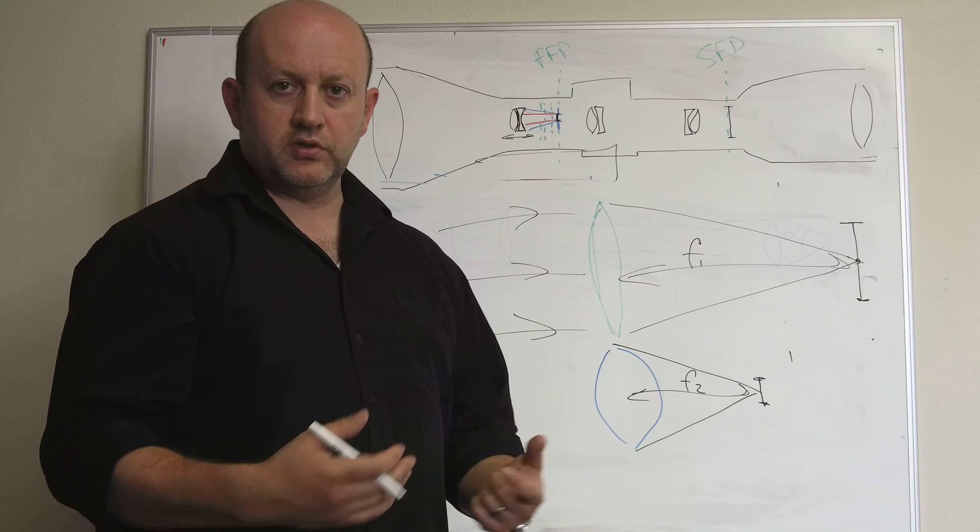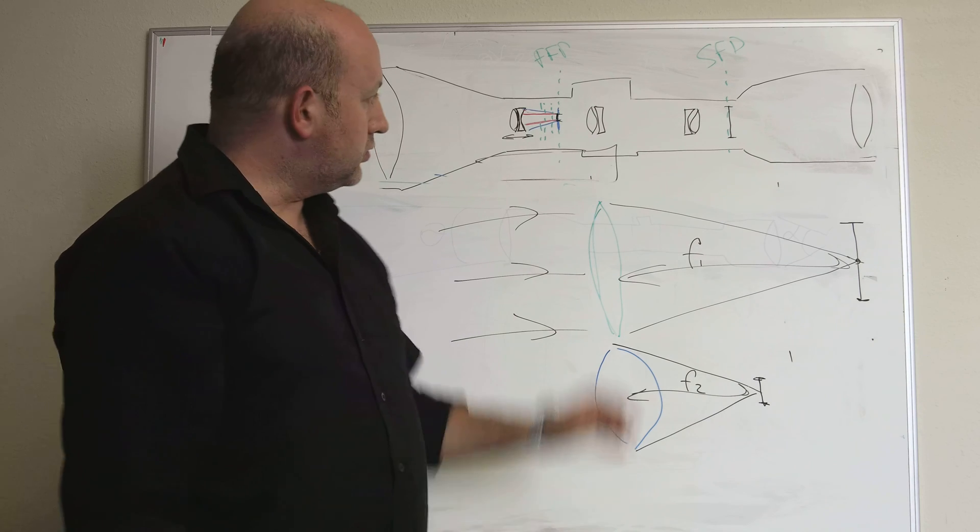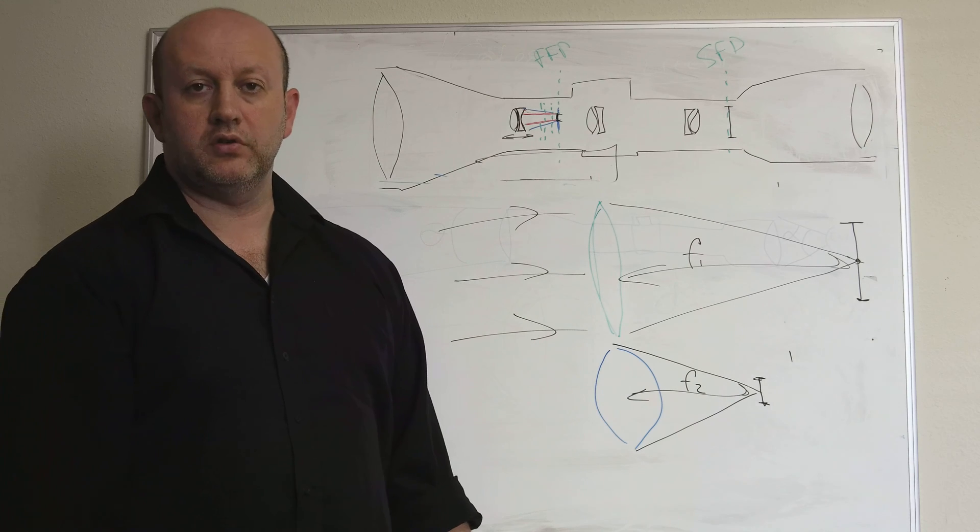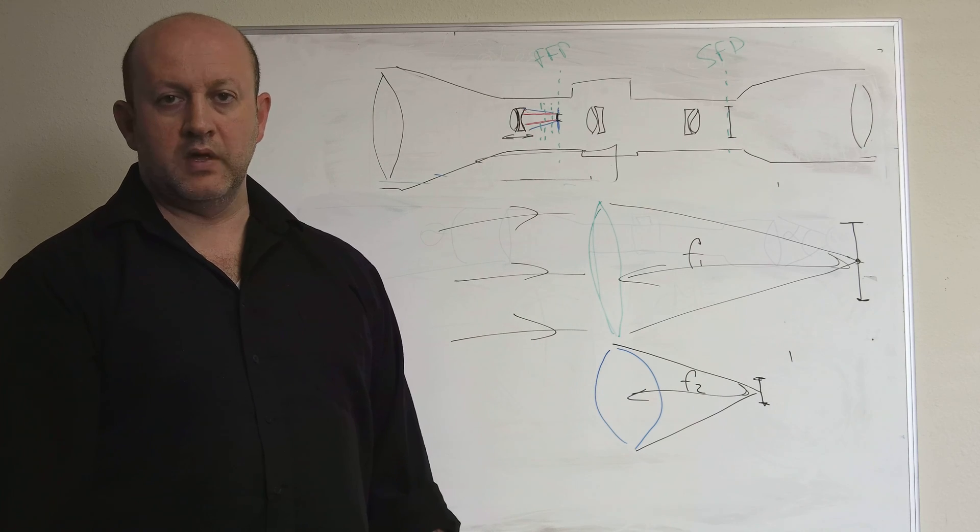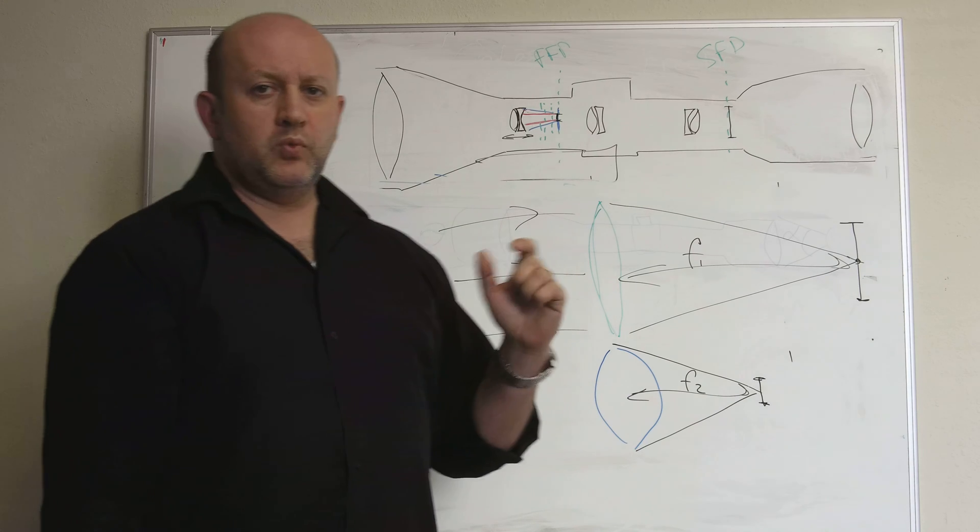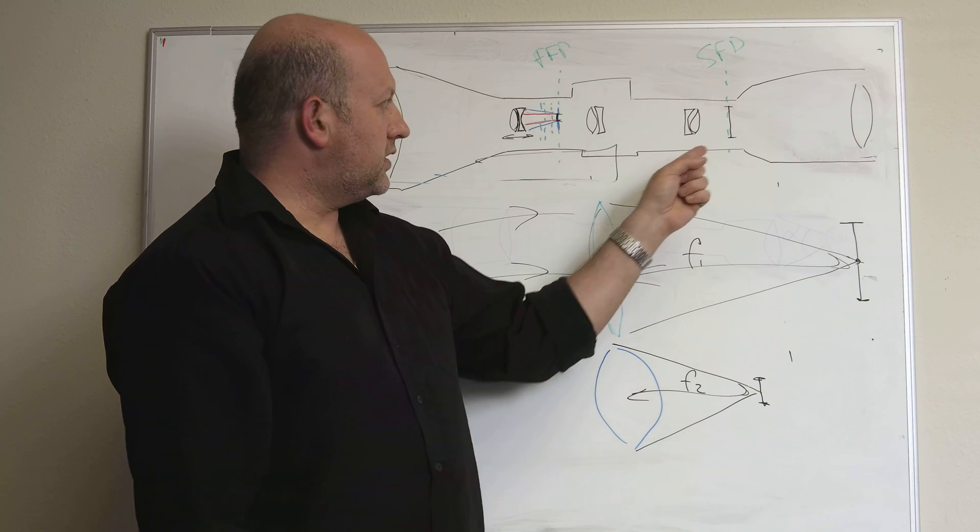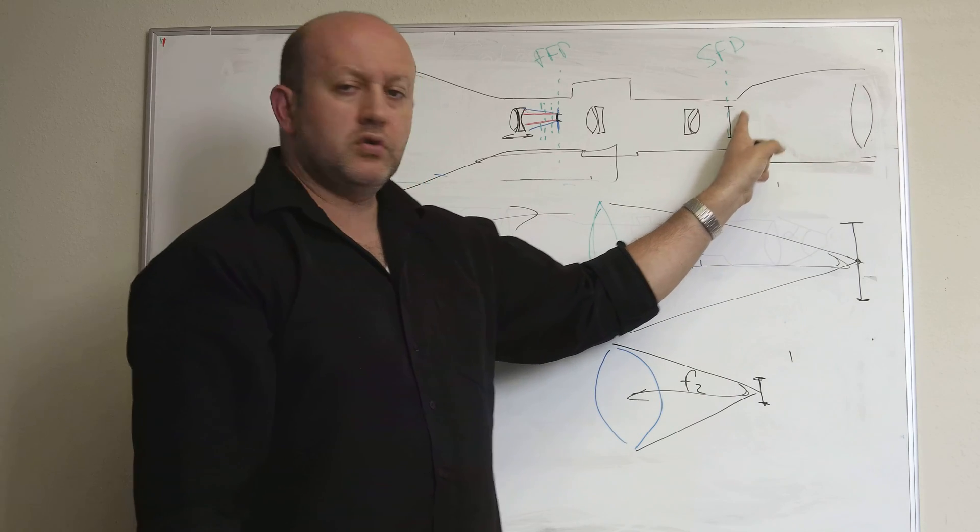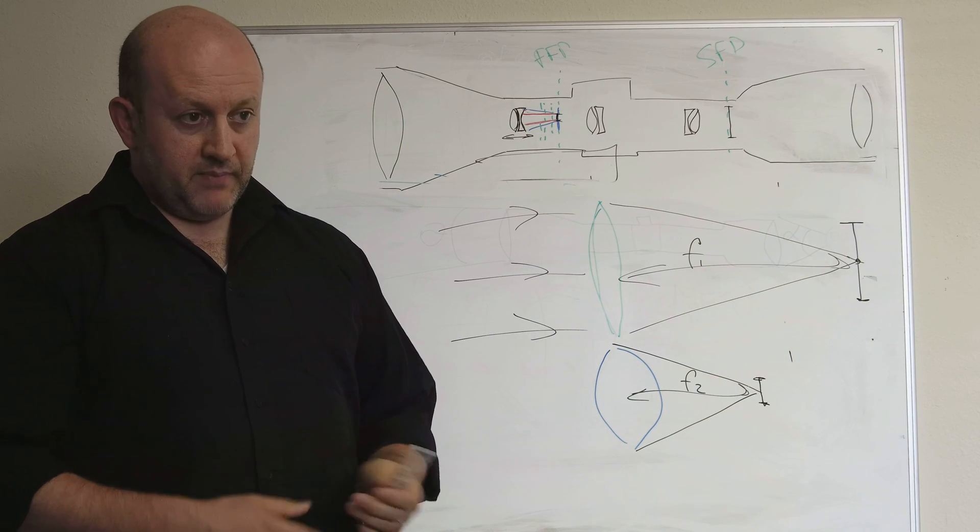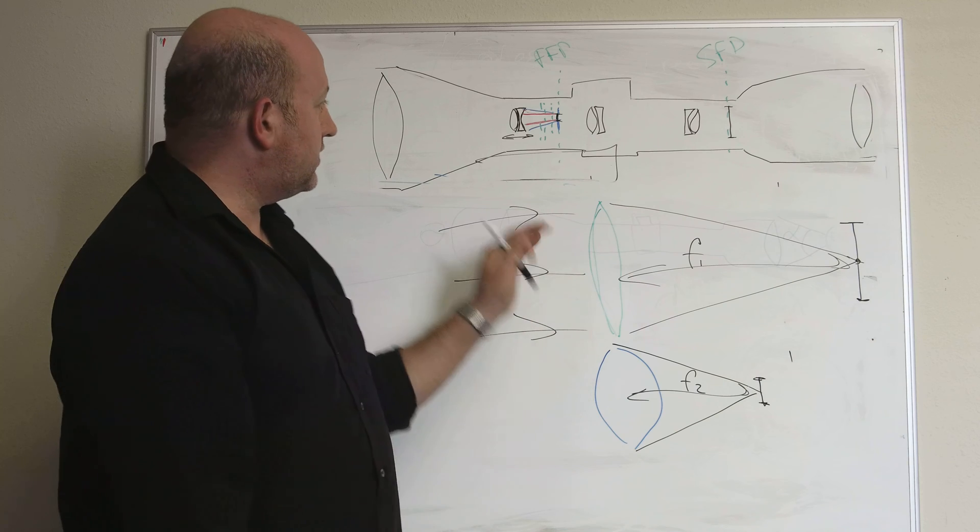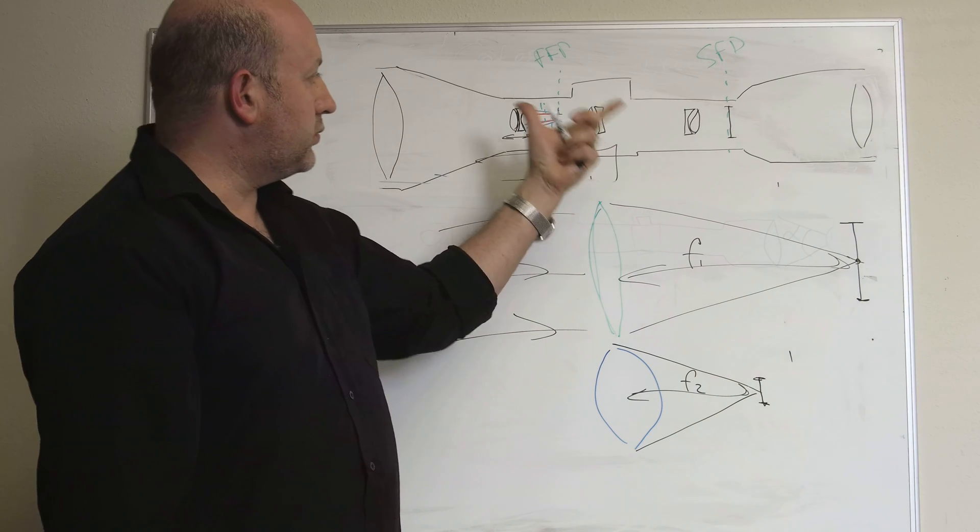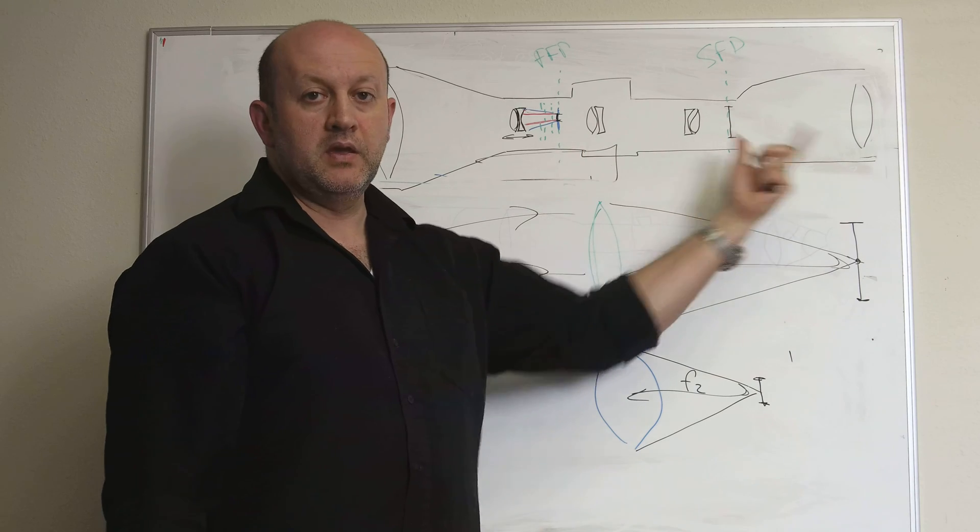On top of it inside the tube, you also need to accommodate the ability to move the erector tube left, right, up, down in order to adjust your point of aim. So all of this starts to matter. There are some ways you can compensate it with an eyepiece. Because an eyepiece takes an image from a second focal plane and projects it out. But fundamentally you have to have everything match.